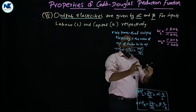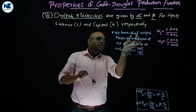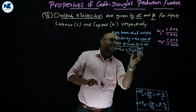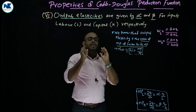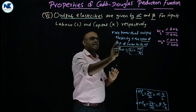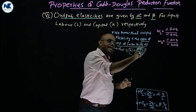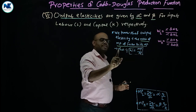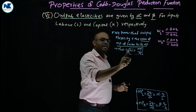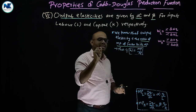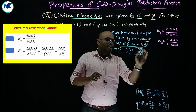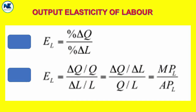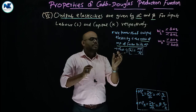A very important result: output elasticity is the ratio of the marginal product of the factor to its average product. That is, output elasticity is equal to marginal product of that factor divided by average product of that factor.